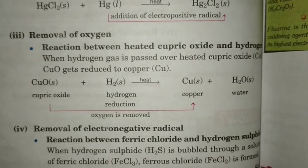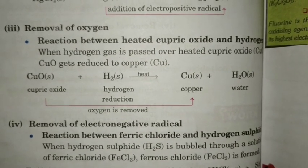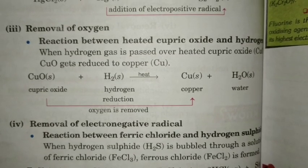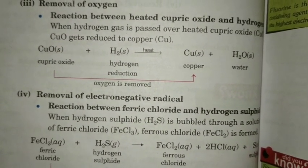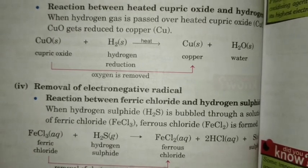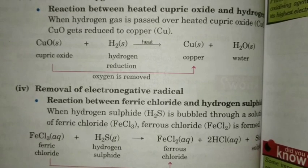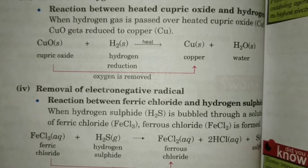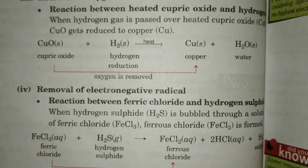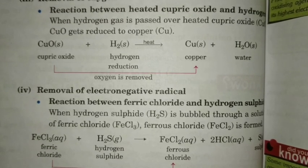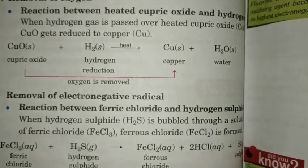Removal of oxygen is reduction. The reaction between heated cupric oxide and hydrogen: CuO plus H2. CuO is converted to Cu — removal of oxygen takes place, so cupric oxide is getting reduced. And H2 to H2O forms — addition of oxygen takes place, and addition of oxygen is oxidation. So H2 is getting oxidized to H2O. Hence this is an example of both oxidation and reduction — cupric oxide is getting reduced to copper, and hydrogen is getting oxidized to H2O.